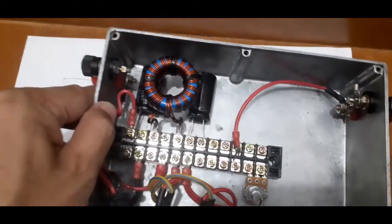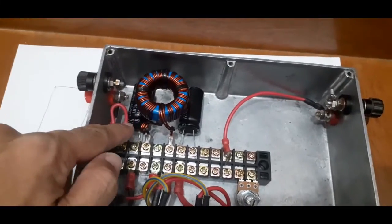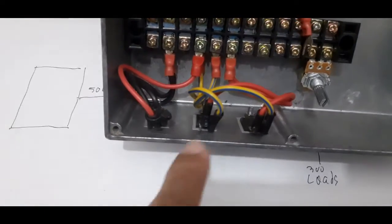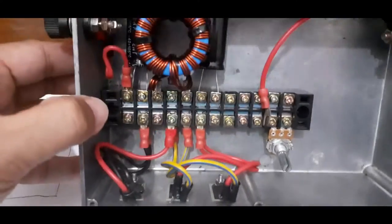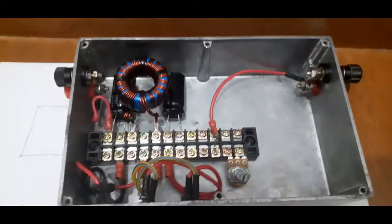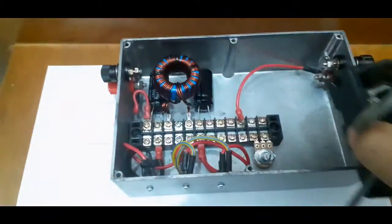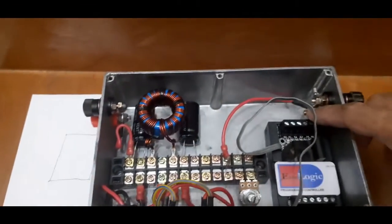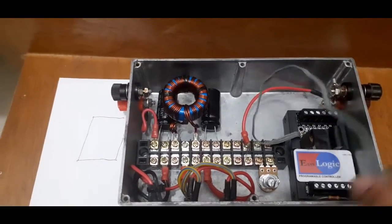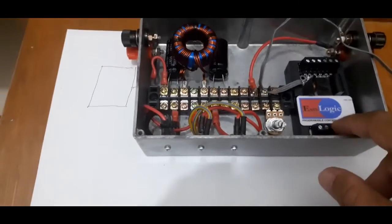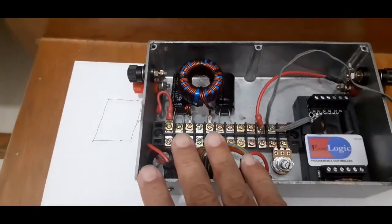So basically, this is the capacitor, the coil, and the semiconductor to control the power. So I will use this programmable controller to control the power circuit.